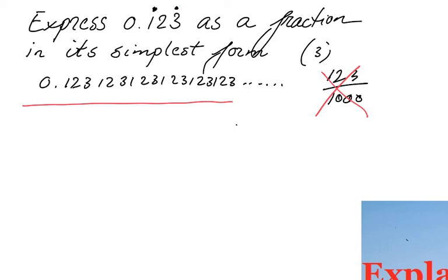And how do you do that? The recurring decimal — you're going to give it a letter. So 0.123 recurring, I'm going to give it a variable and say it equals x. You can call it a, b, c, d, z — it doesn't matter. I say x.